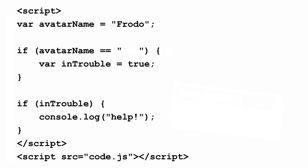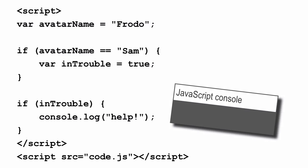Now let's see what happens if we declare and initialize the variable in trouble to true only if avatar name is Sam instead. That means the conditional will not be true, so we will not execute that statement. This time we don't see help displayed in the console, but we don't see an error either. That's because, just like before, the variable in trouble is hoisted. It's as if we declare the variable at the top of the code and then initialize its value only if avatar name equals Sam. Since avatar name is Frodo, not Sam, the value of in trouble is undefined, which is why we don't see help in the console.